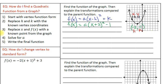Step three: replace x and f(x) with a known point from the graph. Our known point is negative four, one. The y value of one goes in for f(x), and the x value of negative four is plugged in, giving us 1 = a(−4 + 2)² − 1.